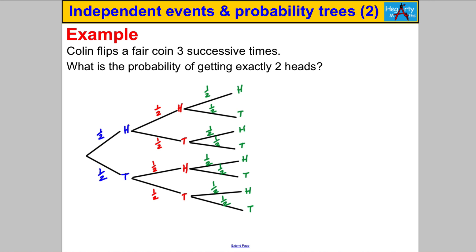This question is only interested in certain outcomes, so let's just calculate the ones we need. What is the probability of getting exactly two heads? In what scenarios would that be? Well, it wouldn't be head-head-head — that's three heads. It could be head-head-tail, or head-tail-head, but not head-tail-tail. And tail-head-head is the only other one, because if you have more than one tail you can't have two heads. So those are the possibilities we're interested in.